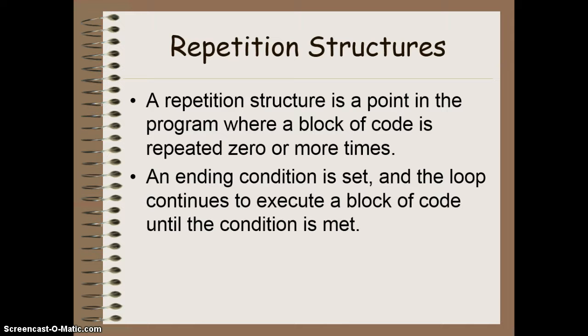Now, as I recall, a repetition structure is a point in the program where a block of code is repeated either zero or more times. The number of times it repeats is based upon an ending condition that we set. And if that ending condition is true, we execute that block of code. So it is in fact possible for a repetition structure to not run at all if that initial condition is not met when it first is reached.